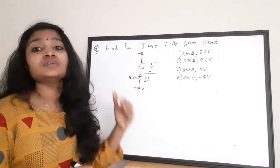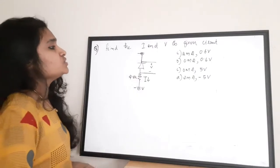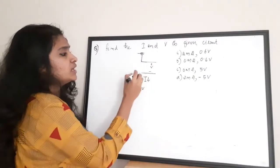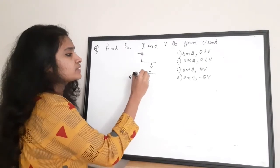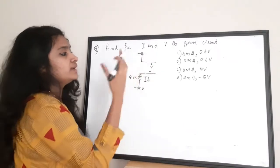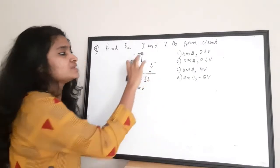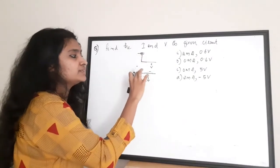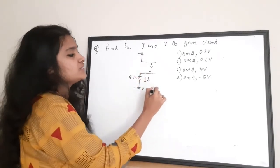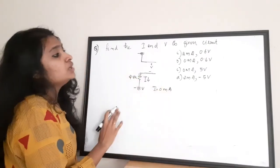In this question, the diode is in reverse biased configuration, so we can consider it as an open circuit. Since it is an open circuit connected in series with the resistor, the current through the resistor is I = 0 milliampere.